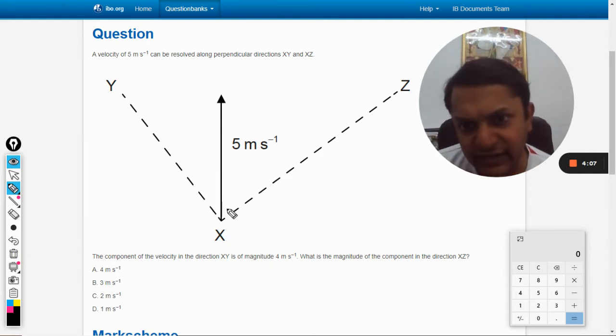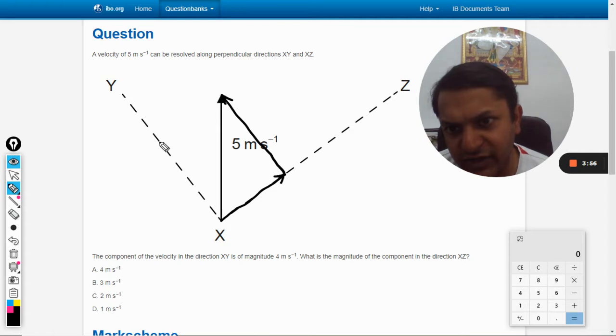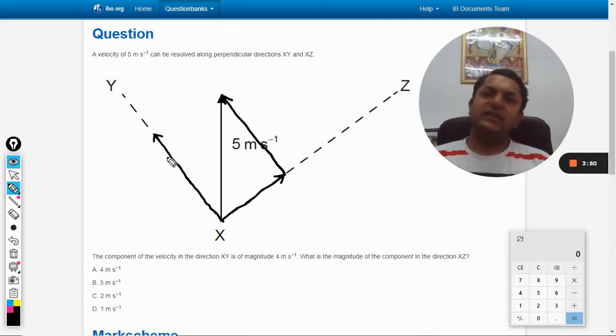These are the components, or we can take this and draw a parallel line here which will be like this. It's the same thing. So this vector has been resolved into two.